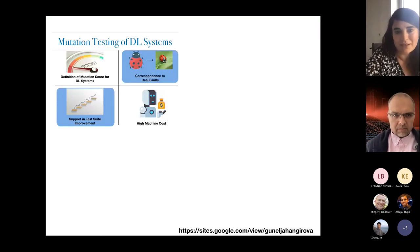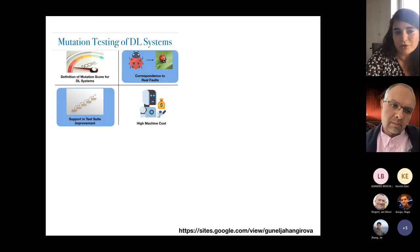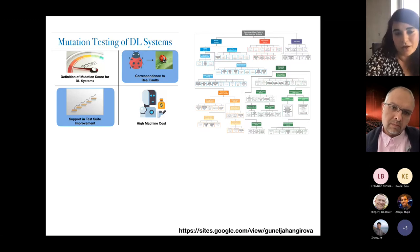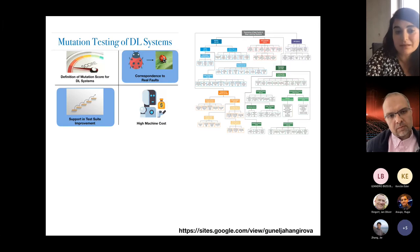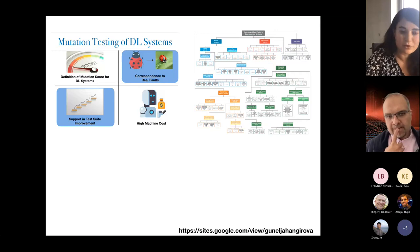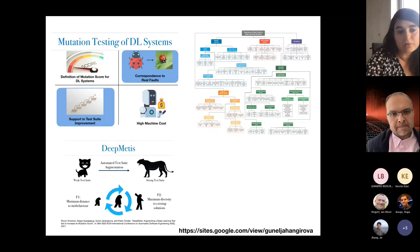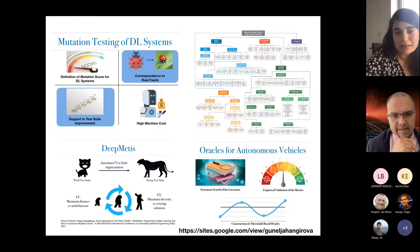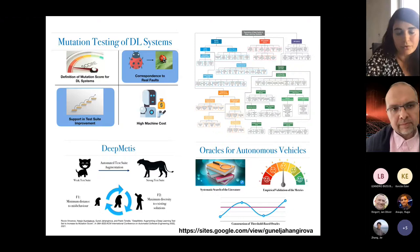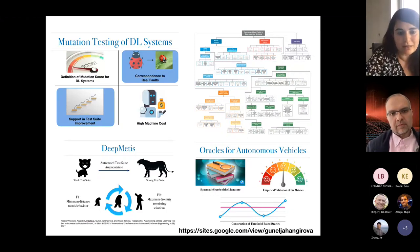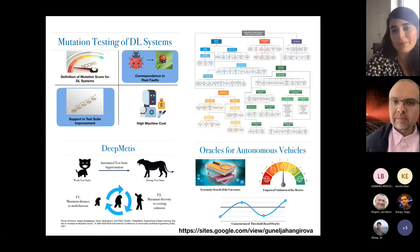To conclude: I talked about mutation testing of deep learning systems and the challenges associated with applying this approach to DL systems. I discussed our work extracting real faults and building a taxonomy for deep learning systems, which was used to create mutation operators corresponding to real faults. I then discussed DipMaTIS for automatically improving a test suite given an unkilled mutant. Lastly, I presented the work on oracles for autonomous vehicles, which uses the mutation testing approaches described throughout.